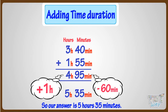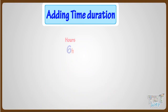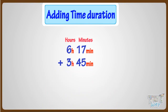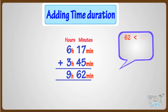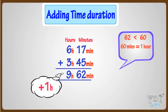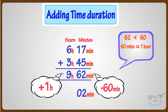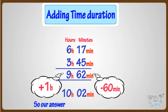Let's take another example. We have to add 6 hours 17 minutes to 3 hours 45 minutes. Adding hours, we get 9 hours, and adding minutes, we get 62 minutes. Here the minutes are more than 60, and we know 60 minutes make an hour. So add 1 to hours and subtract 60 from minutes. Subtracting 60 from minutes, we will be left with 2 minutes, and by adding 1 to hours, we get 10 hours. So our answer is 10 hours and 2 minutes.